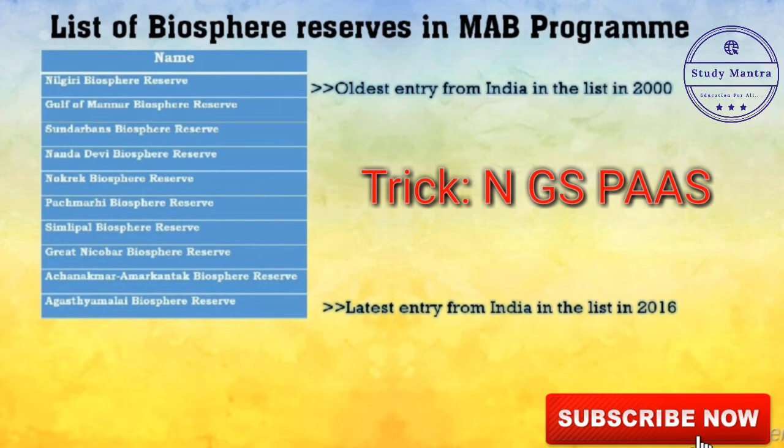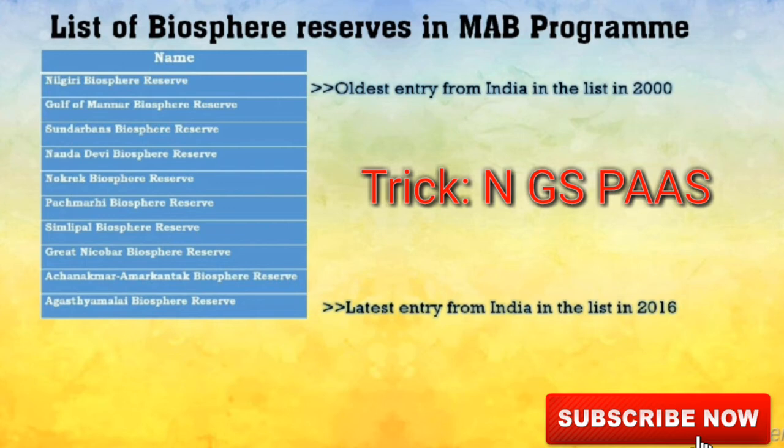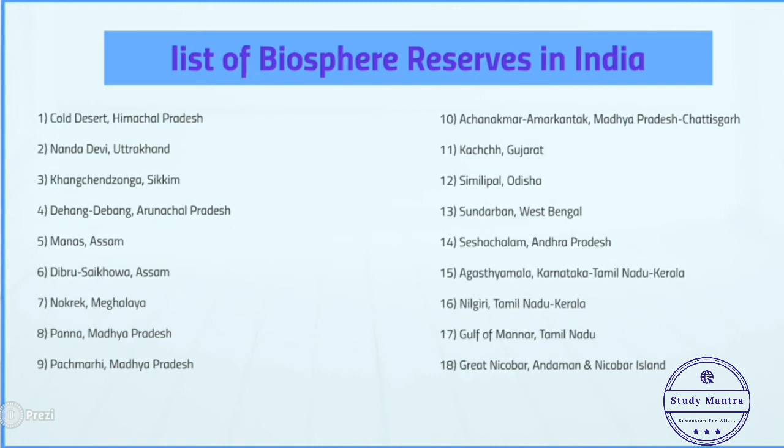Out of all 18 biosphere reserves, only two start with A and both of them come under the MAB program. You can also remember it this way. So the full trick 'NGS PAAS' covers all 10 MAB biosphere reserves.